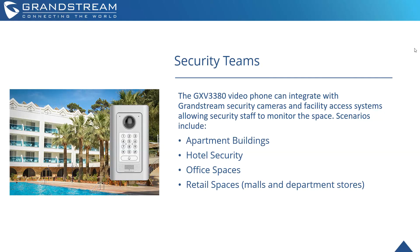The GXV3380 is also great for security teams, deployed in any kind of security office or checkpoint. It integrates seamlessly with our GDS facility access systems, allowing security staff to monitor any spaces where GDS systems are deployed. If calls are made in, they go directly to the device, bring up the video feed — for example with the GDS3710 — and access can be denied or granted. This is ideal for apartment buildings, hotel security, office spaces, and retail spaces like larger malls and department stores with multiple entrances, all controlled and monitored from one spot without security staff having to physically check every door.